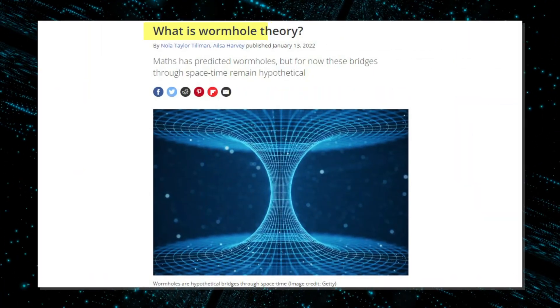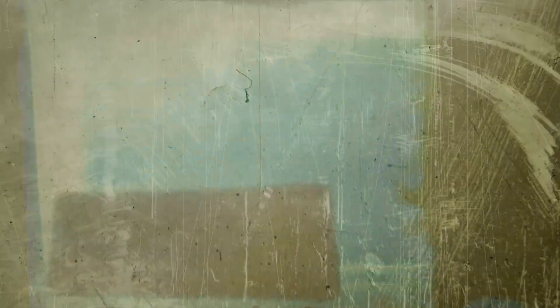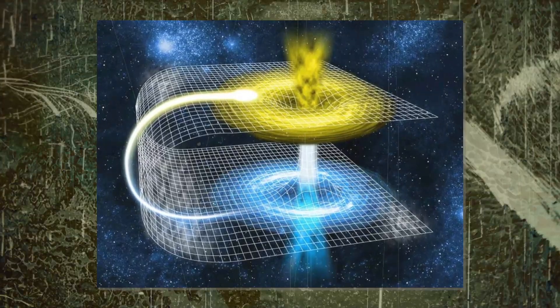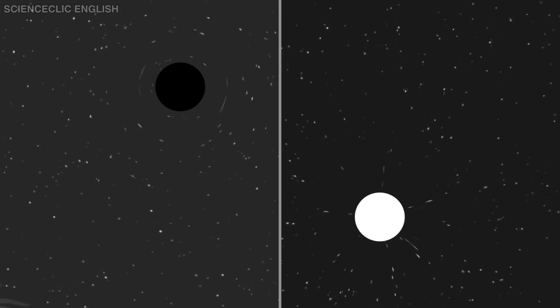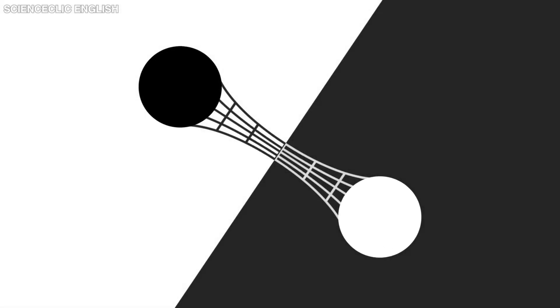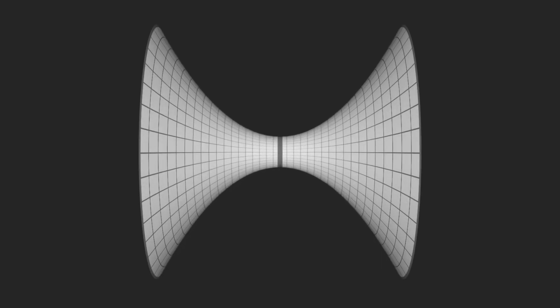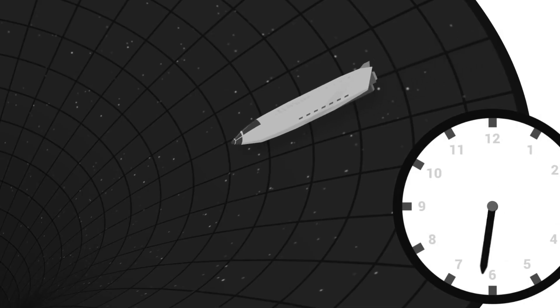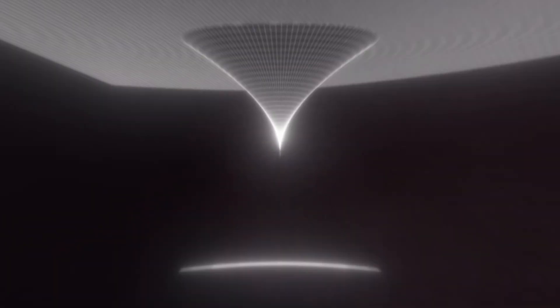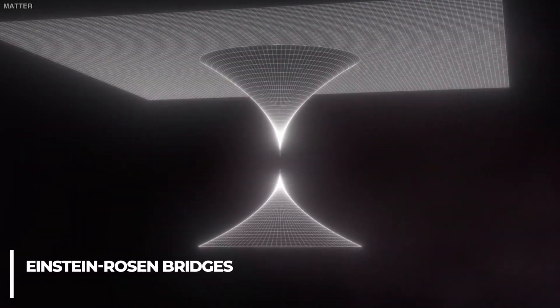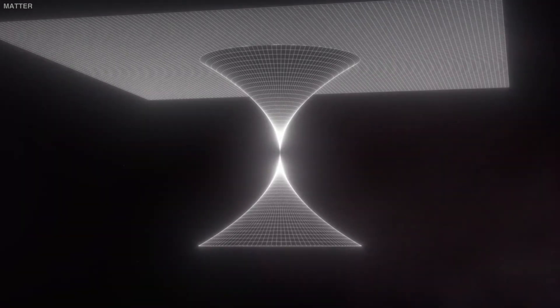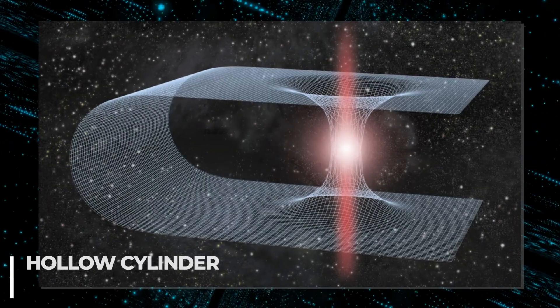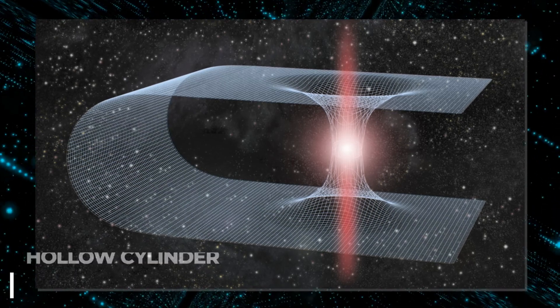Wormholes are predicted by the theory of general relativity. In 1935, Einstein and physicist Nathan Rosen used the theory of general relativity to elaborate on the idea, proposing the existence of bridges through space-time. These bridges connect two different points in space-time, theoretically creating a shortcut that could reduce travel time and distance. The shortcuts came to be called Einstein-Rosen bridges, or in other words, wormholes.